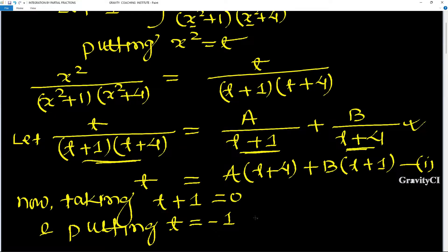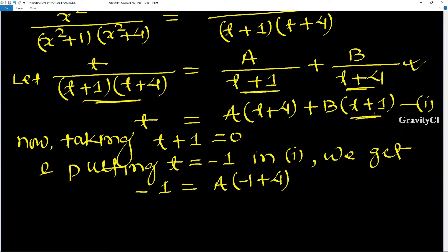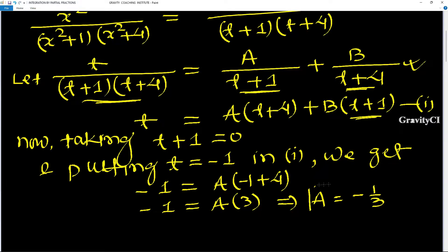Putting t = -1 in equation one: -1 = A(-1+4), so -1 = A(3), therefore A = -1/3. This is our A value.